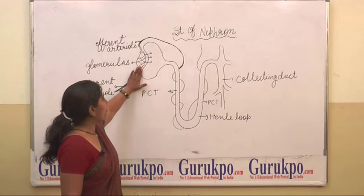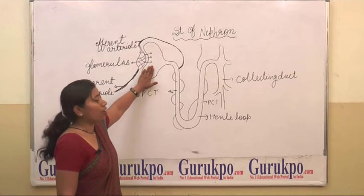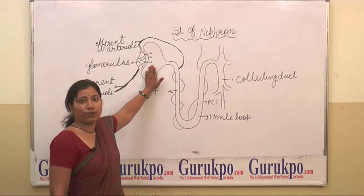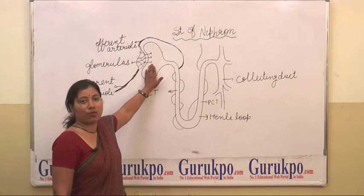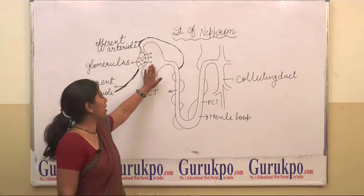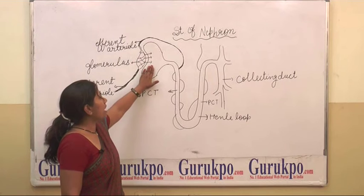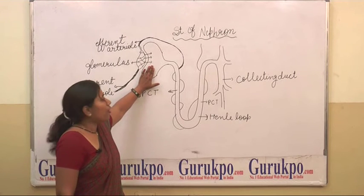Due to ultrafiltration, many components like uric acid, amino acid, glucose, and other components enter into Bowman's capsule.